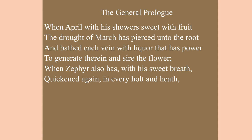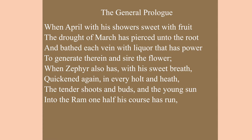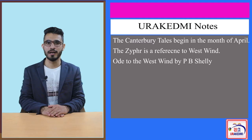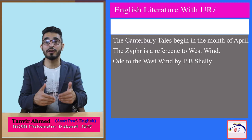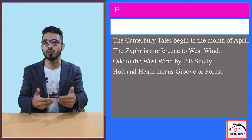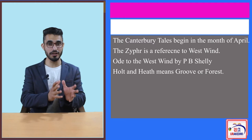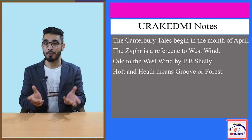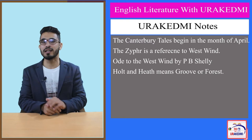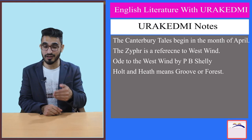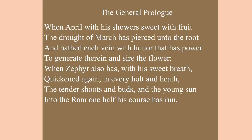In every holt and heath, the tender shoots and buds, and the young sun into the Ram, one half his course has run. This holt and heath is a reference to the forest and vegetation. The forests, which in winter were not beautiful, not green, not lively, were brought back to life by this west wind and the showers of April.